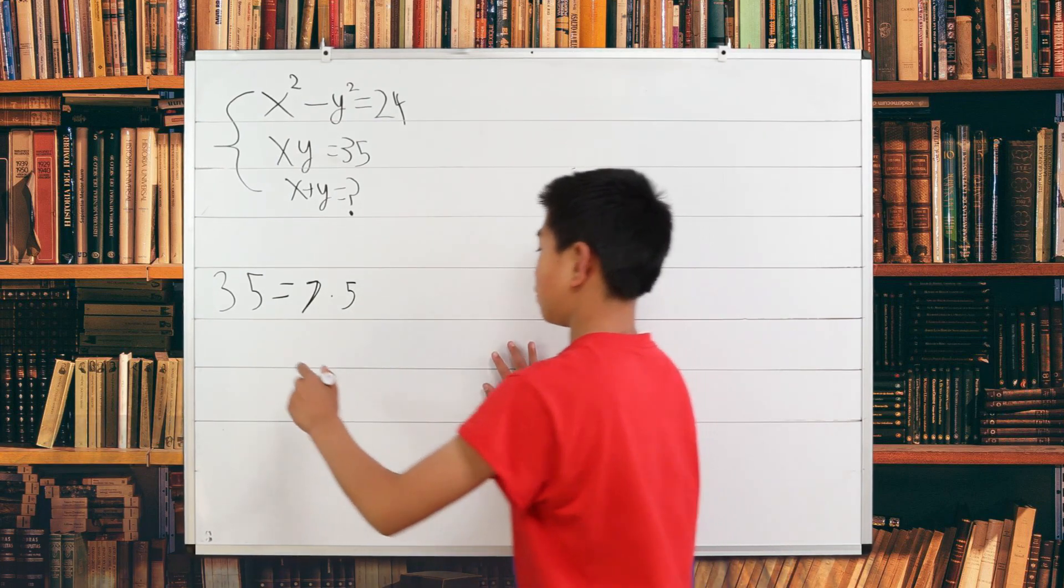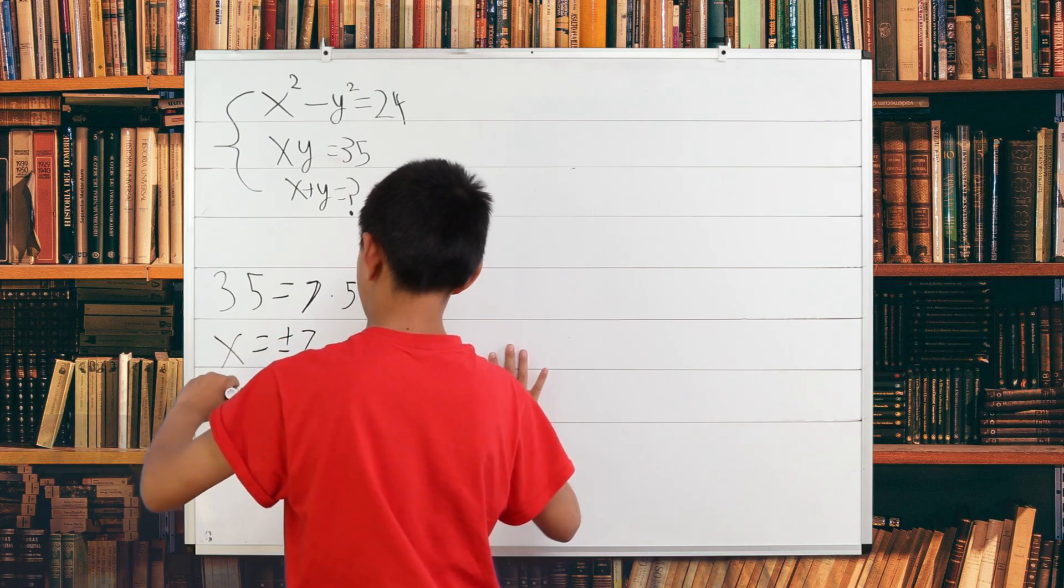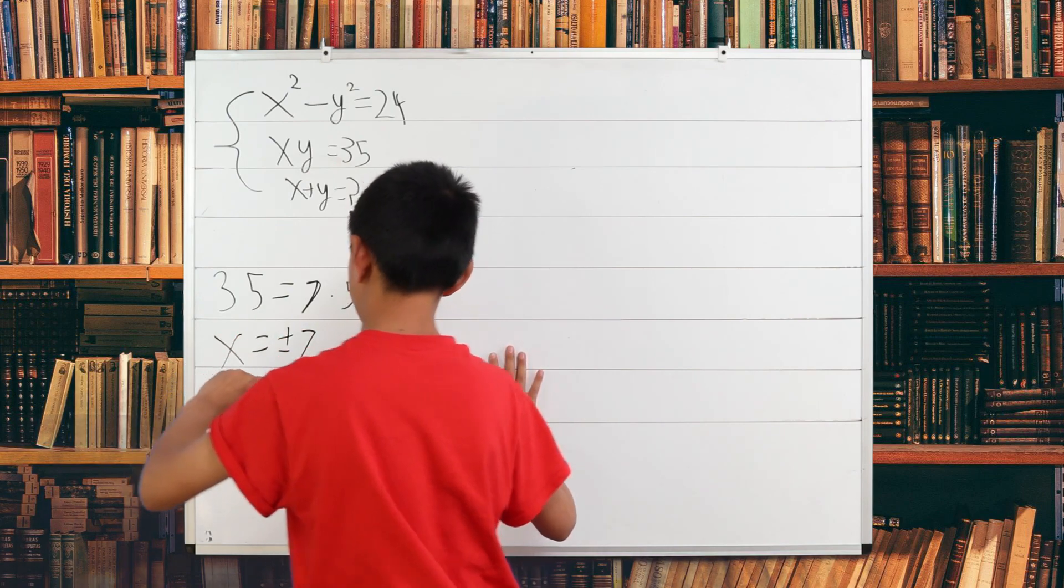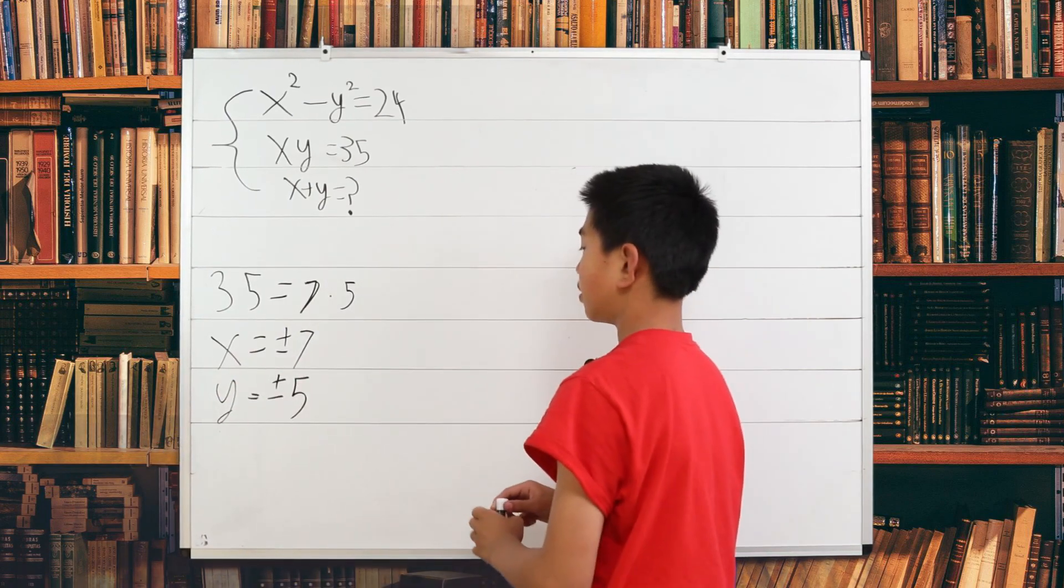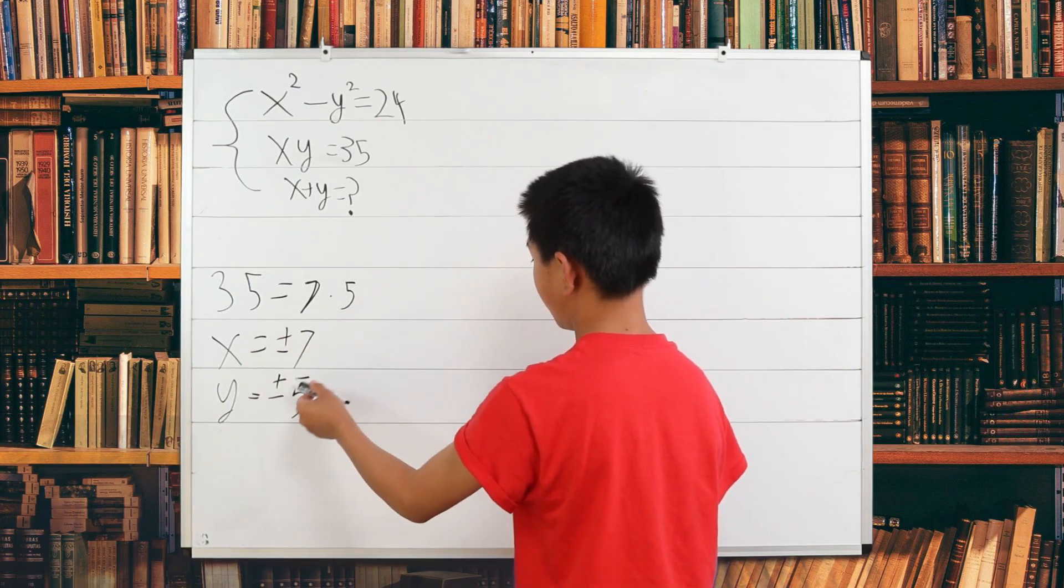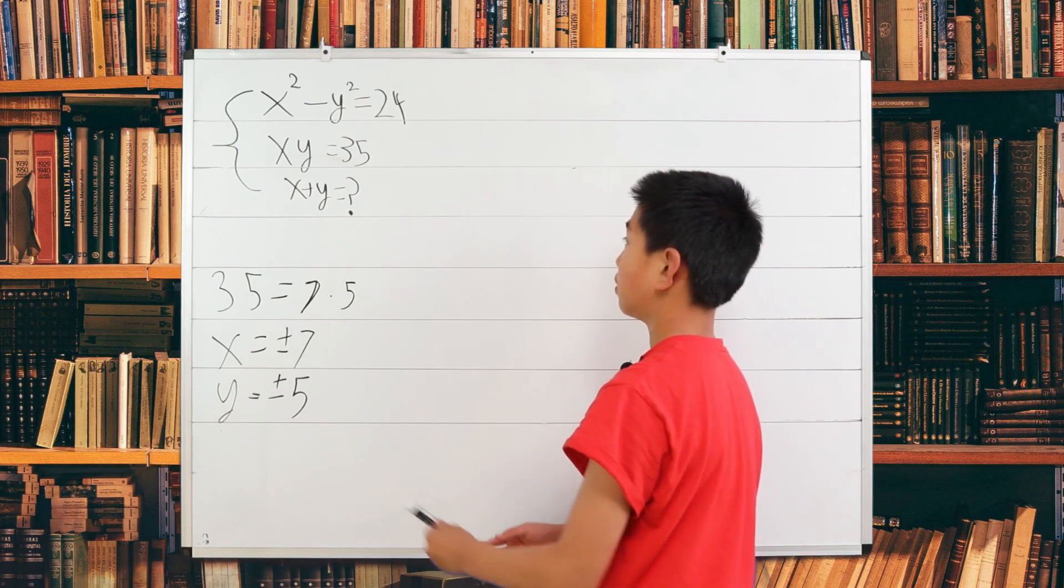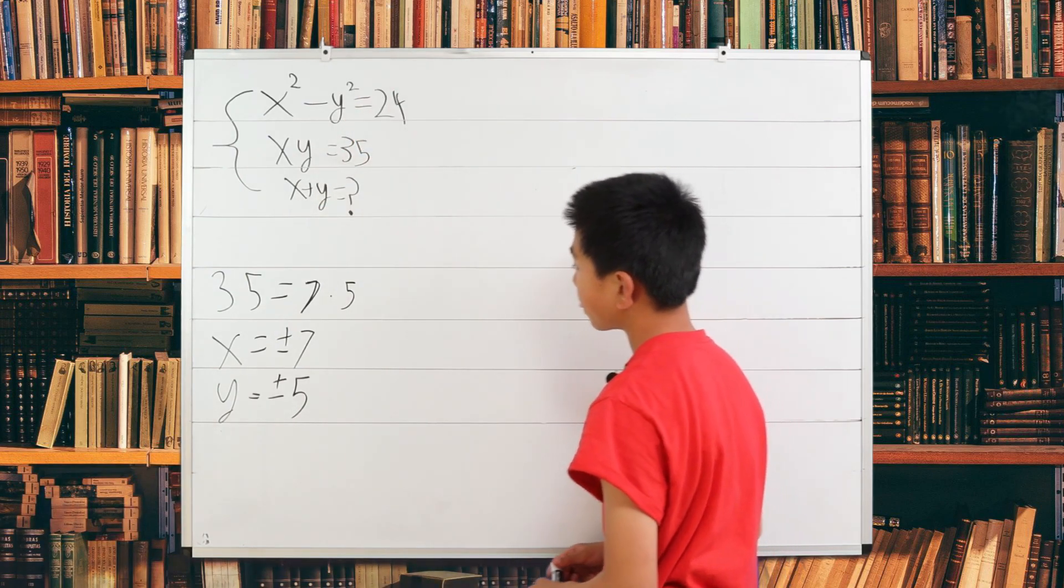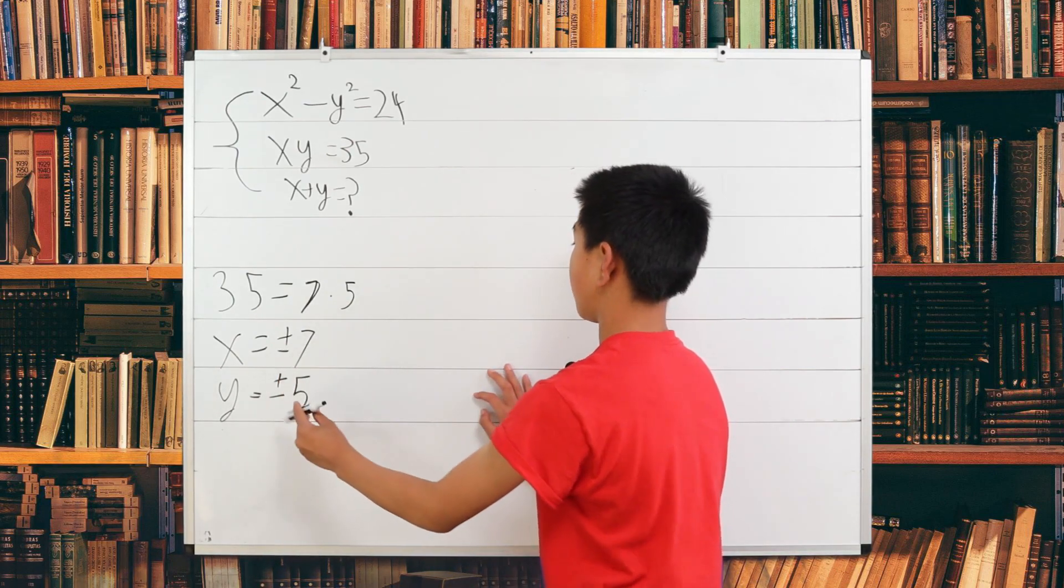x is positive or negative 7 and y is equal to positive or negative 5. Notice that it's either both positive or both negative, since they both come out with the same outcome on both of these terms.